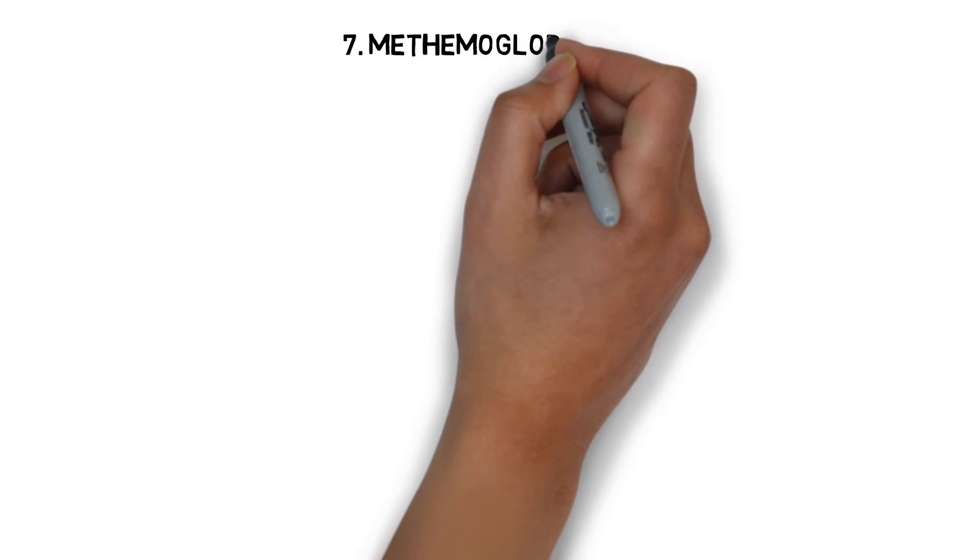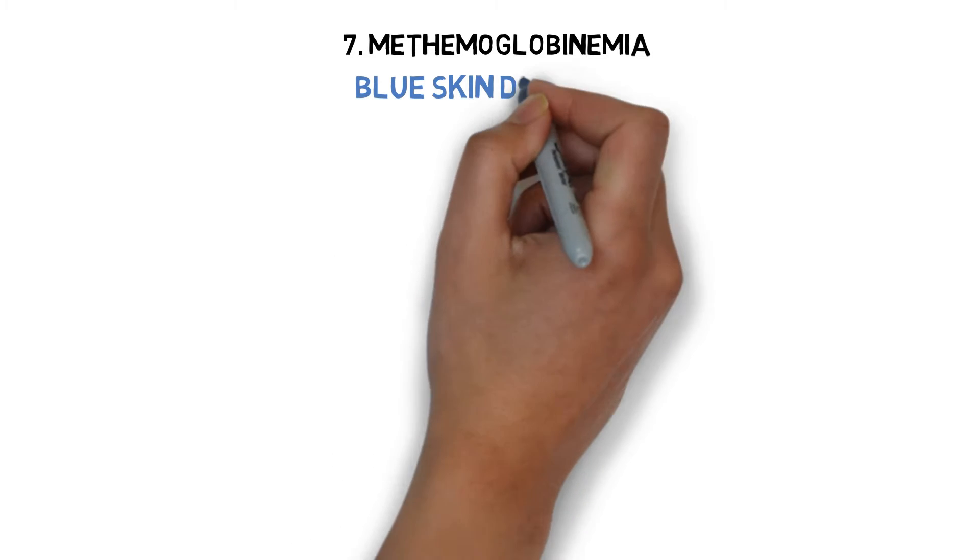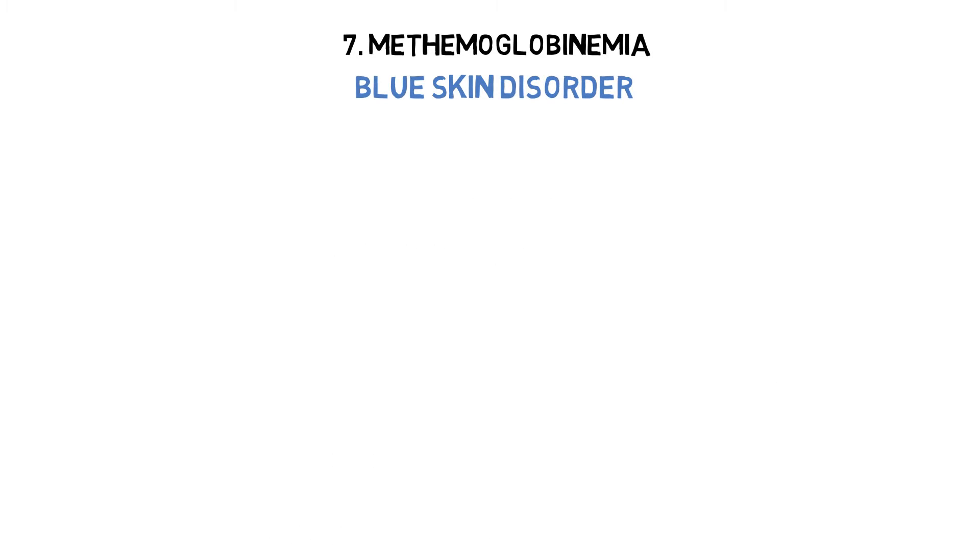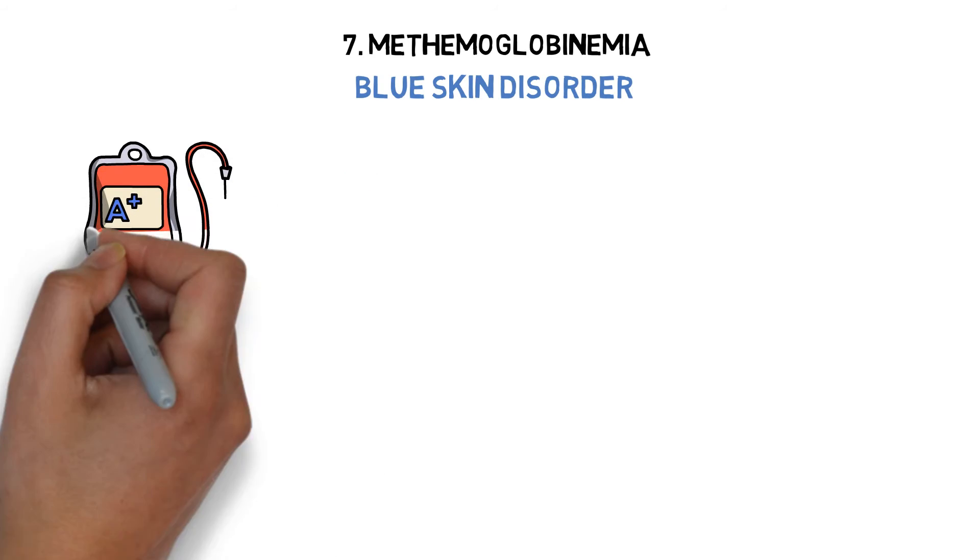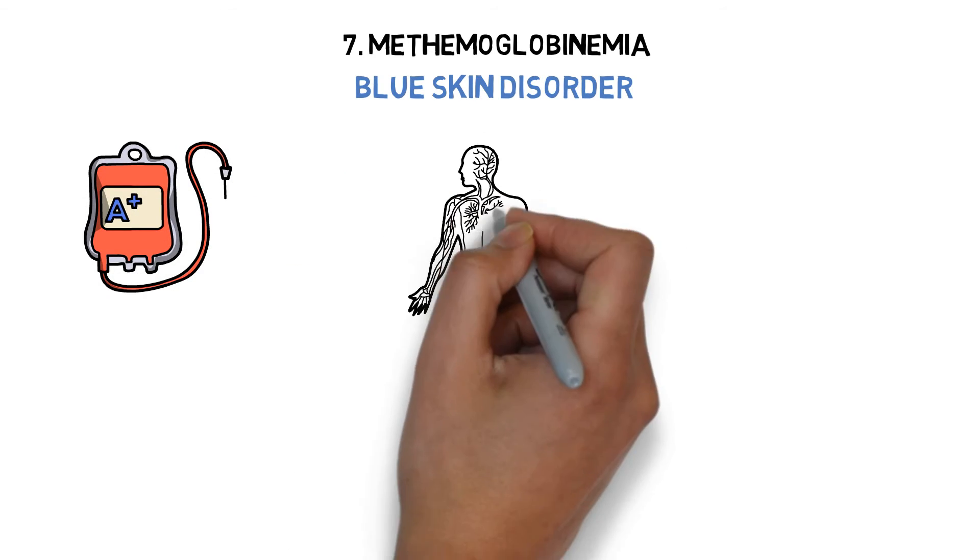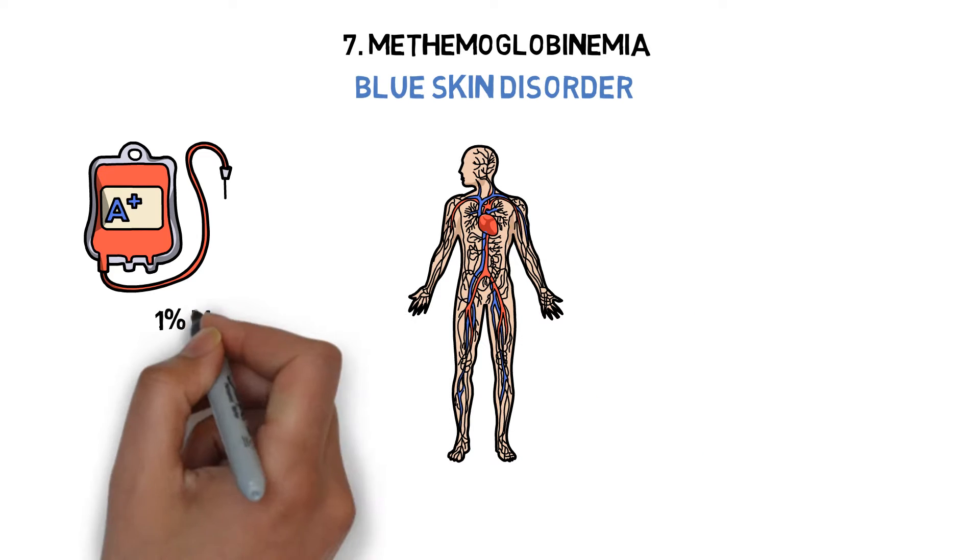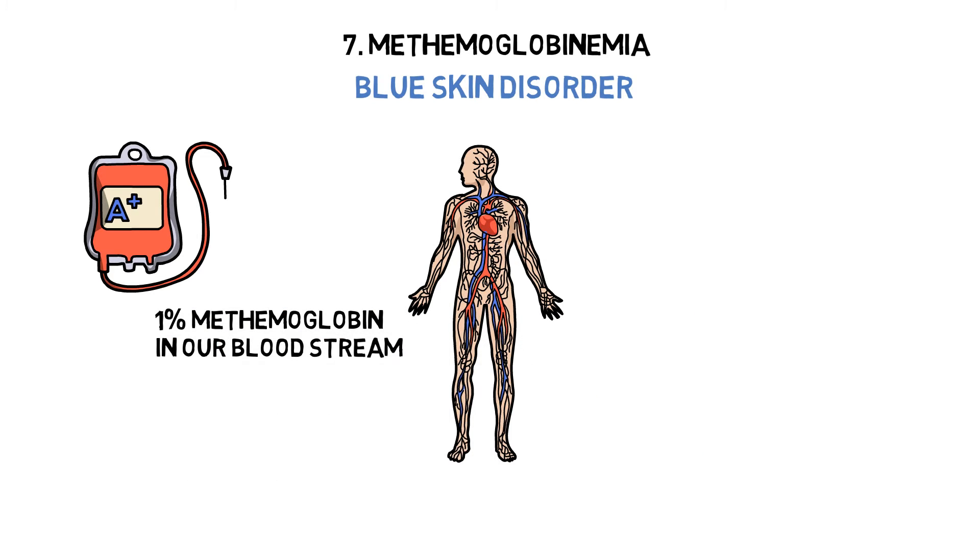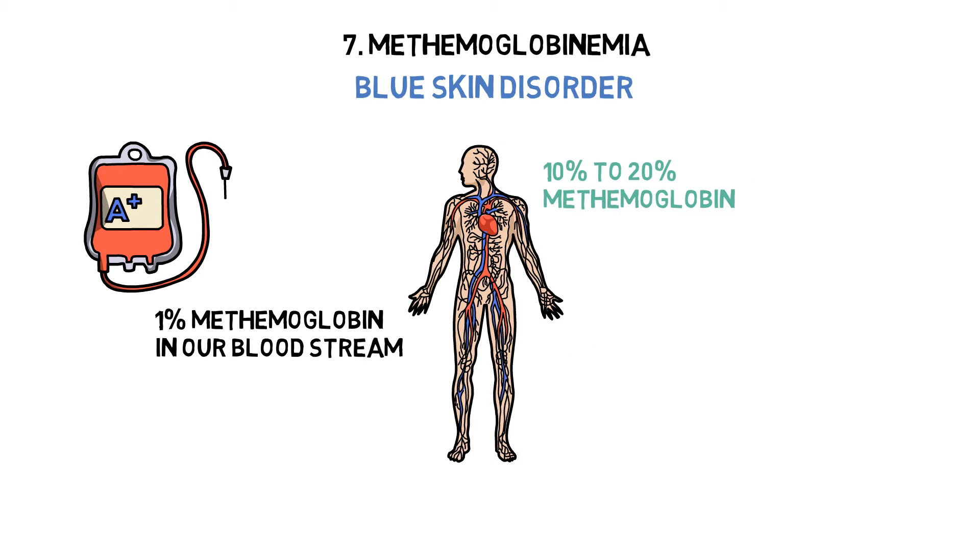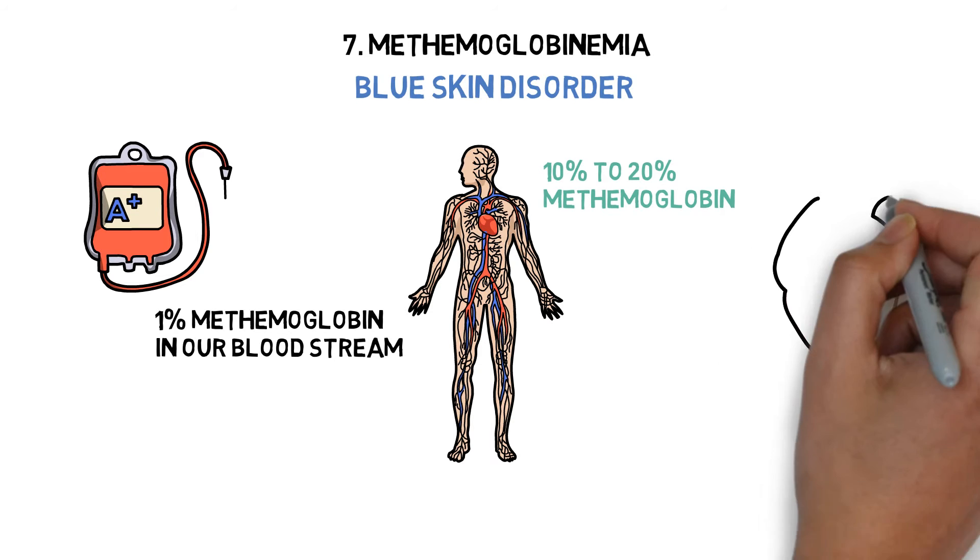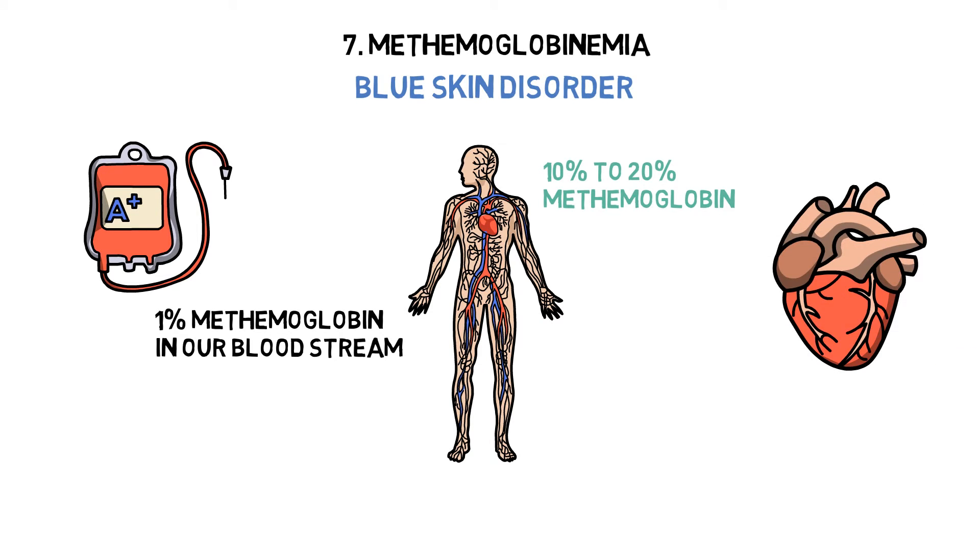Number 7: Methemoglobinemia. Known more commonly as blue skin disorder, this disease is characterized by an abnormal amount of methemoglobin, a type of hemoglobin that is unable to release oxygen into the body tissues. Normally, we carry less than 1% methemoglobin in our bloodstream. However, those who suffer from this disorder have between 10% to 20% methemoglobin. Those affected are at a higher risk of developing heart abnormalities, having seizures, or even dying prematurely.